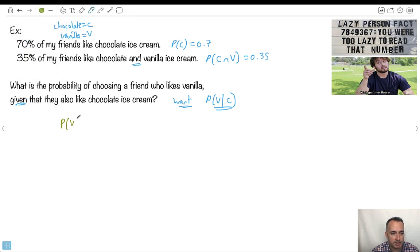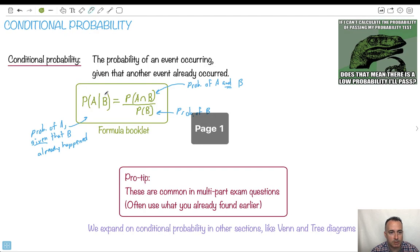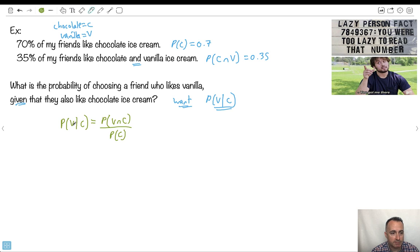Probability of something, given something else, is equal to the probability of the two things occurring together, divided by the probability of the second thing. I'm using this equation, right? Probability of A given B is A and B over B. Probabilities, of course. Probability of V given C is V and C over C.